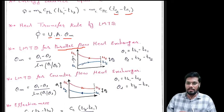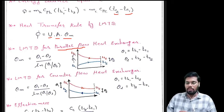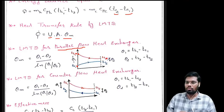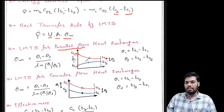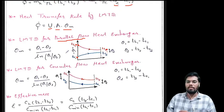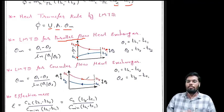What is the difference between parallel and counter flow? In parallel flow, both the inlet of hot fluid and the inlet of cold fluid are from the same point, so θ1 = TH1 - TC1 and θ2 = TH2 - TC2. The direction of both fluids is the same. But in a counter flow heat exchanger, both fluids flow in opposite directions.